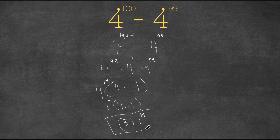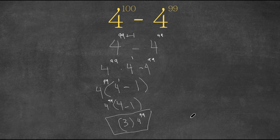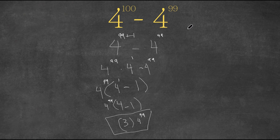This is our answer — 3 times 4 to the power of 99. And if you want, you can plug this into a scientific calculator. Normal calculators actually don't have digits this high, so we can't find the exact numerical answer because that number is too big and has way too many digits. But this expression is also an exact answer. And that's how you solve this exponential problem.